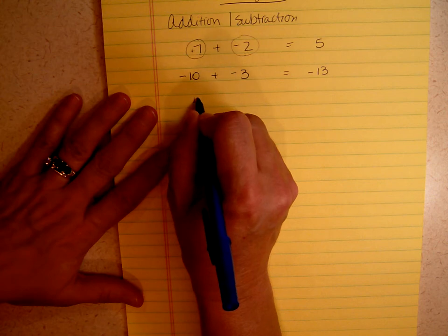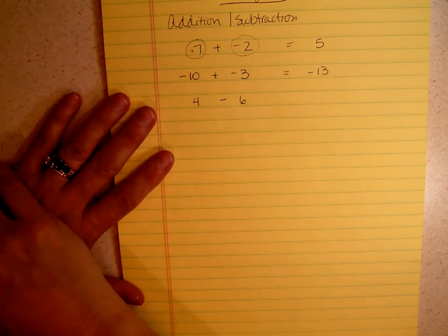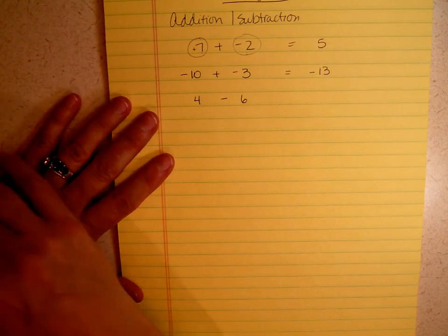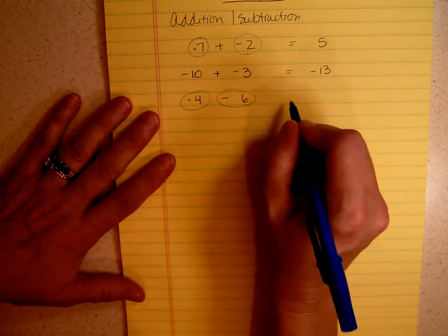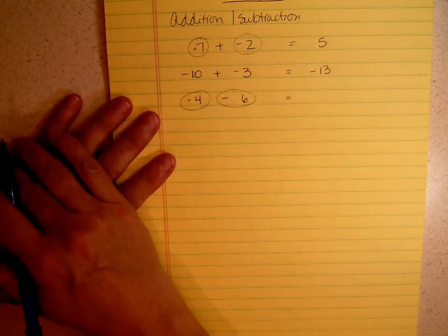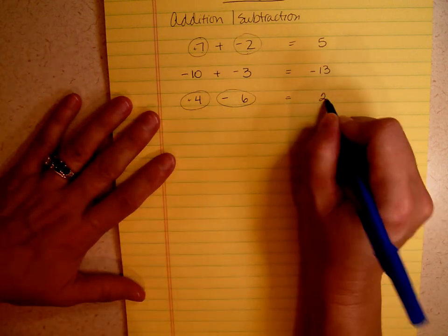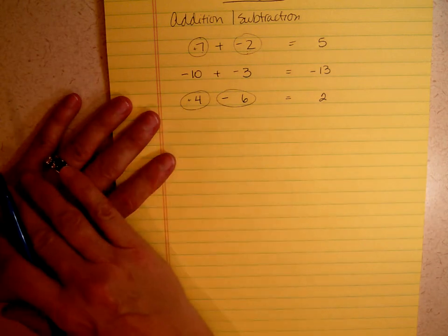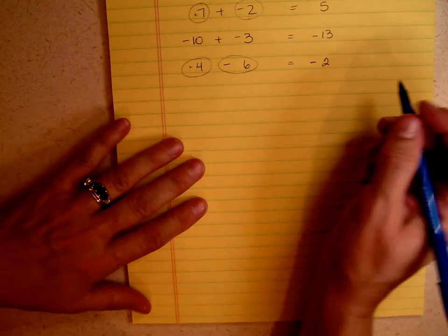What if I have 4 minus 6? Is that a subtraction problem or an addition problem? It really doesn't matter. I can see that the signs are different — that's a plus and that's a minus. And when the signs are different, you always subtract. So 6 minus 4 is 2. Is 6 bigger or 4 bigger? 6 is bigger, so I'm going to keep the sign of the bigger number.